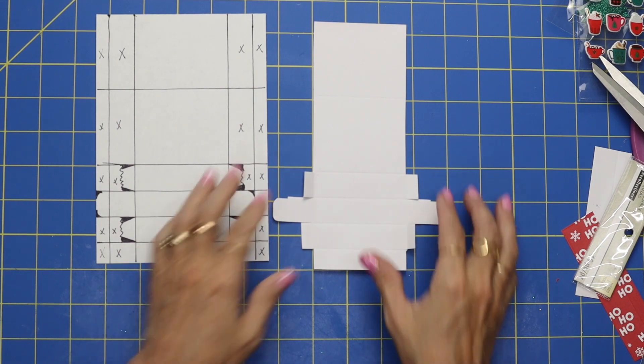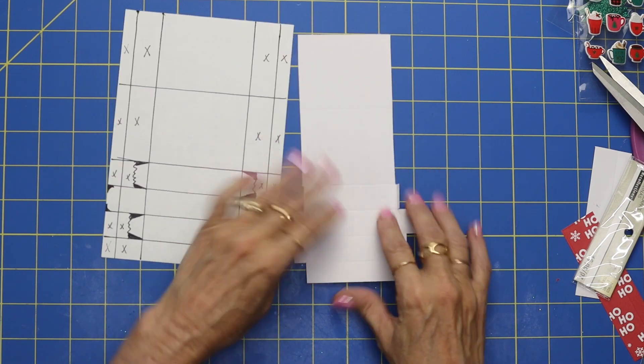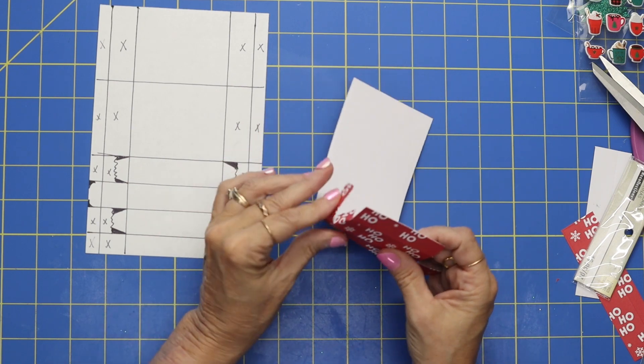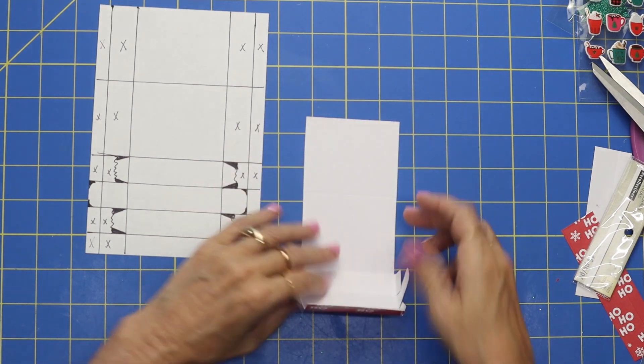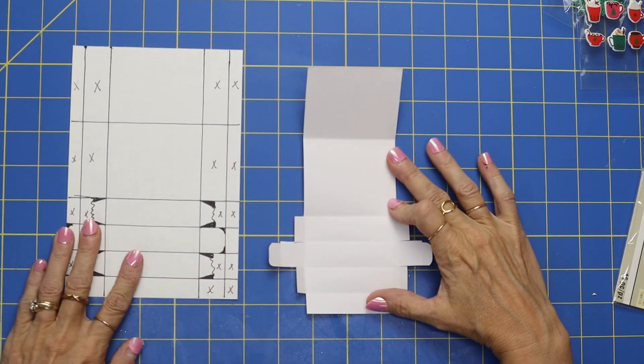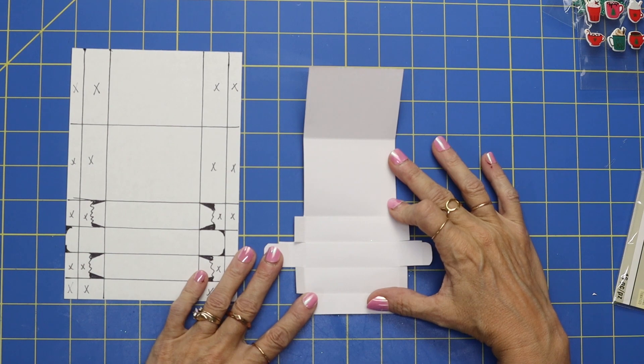But these are going to fold in. Fold those in, fold that in, fold that in. So there is our cutout box.